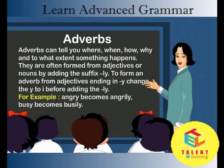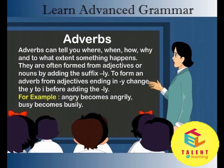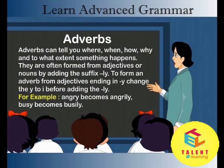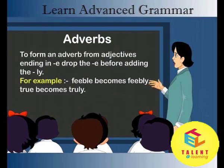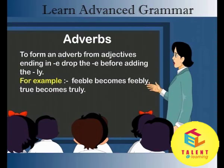Adverbs. Adverbs can tell you where, when, how, why, and to what extent something happens. They are often formed from adjectives or nouns by adding the suffix -ly. To form an adverb from adjectives ending in y, change the y to i before adding -ly. For example, angry becomes angrily, busy becomes busily. To form an adverb from adjectives ending in e, drop the e before adding -ly. For example, feeble becomes feebly, true becomes truly.